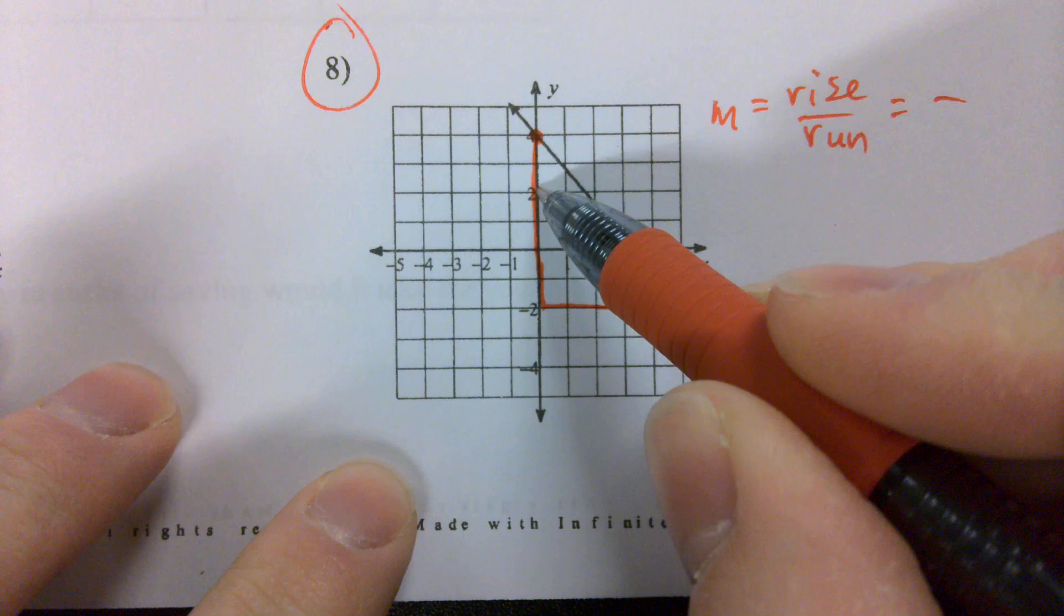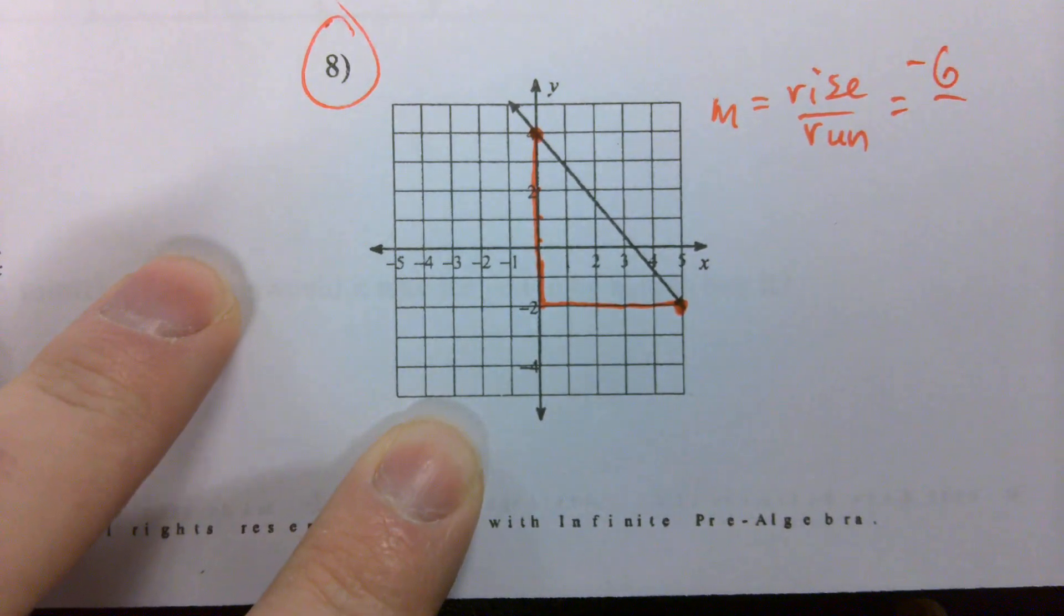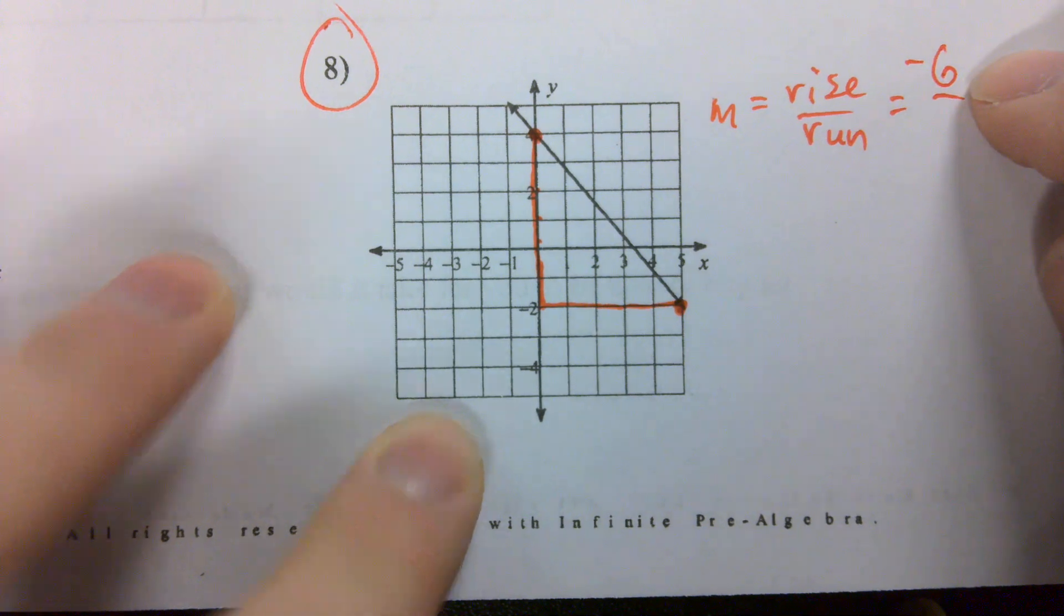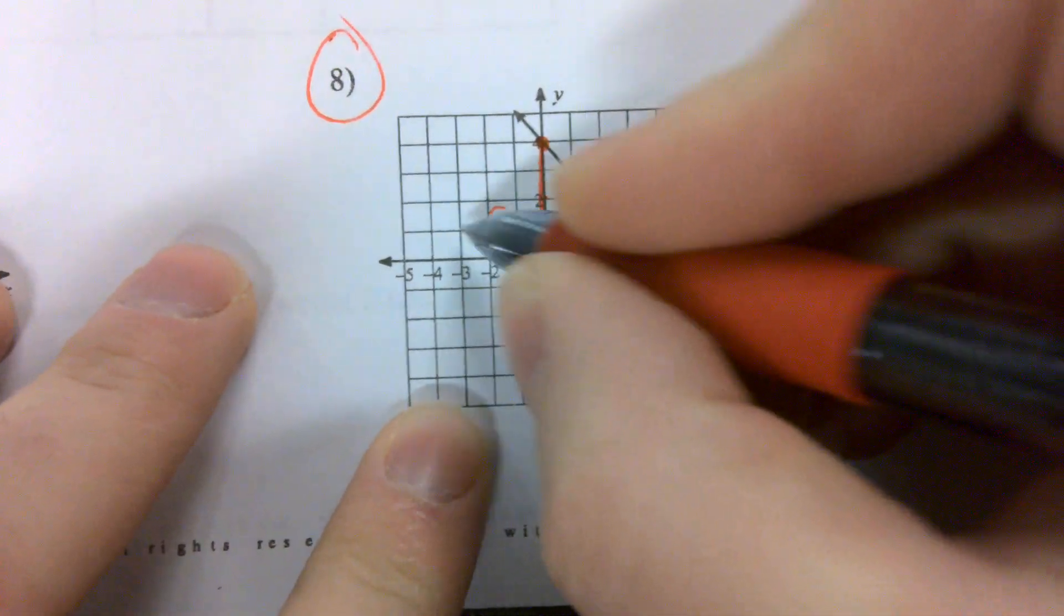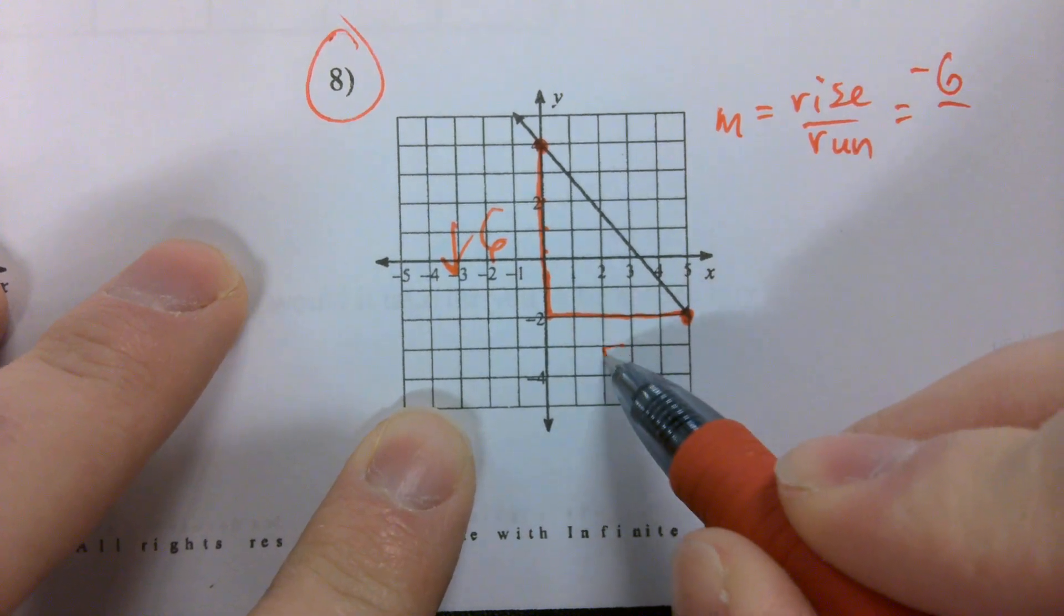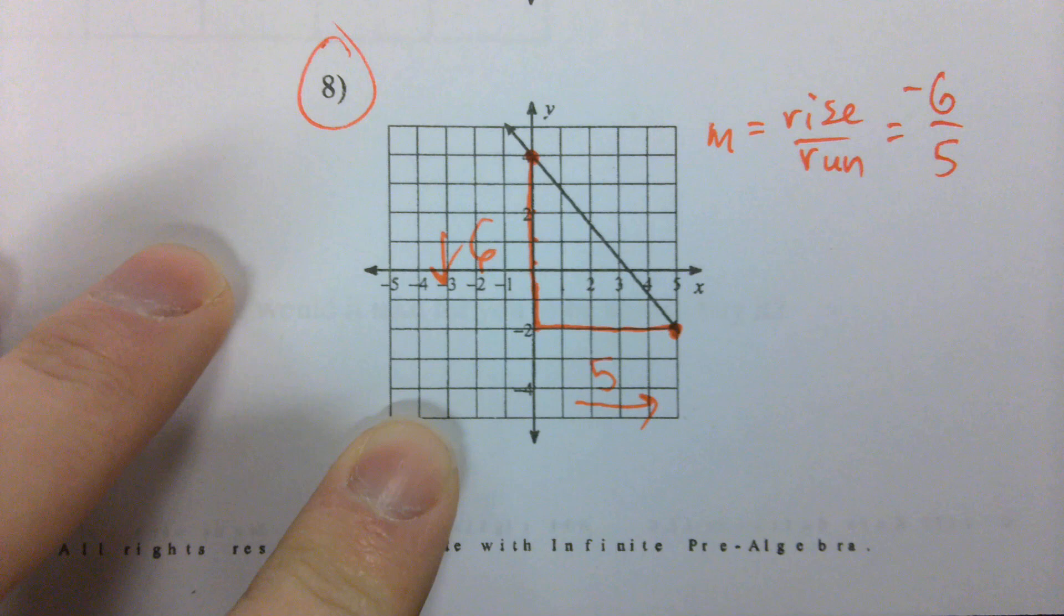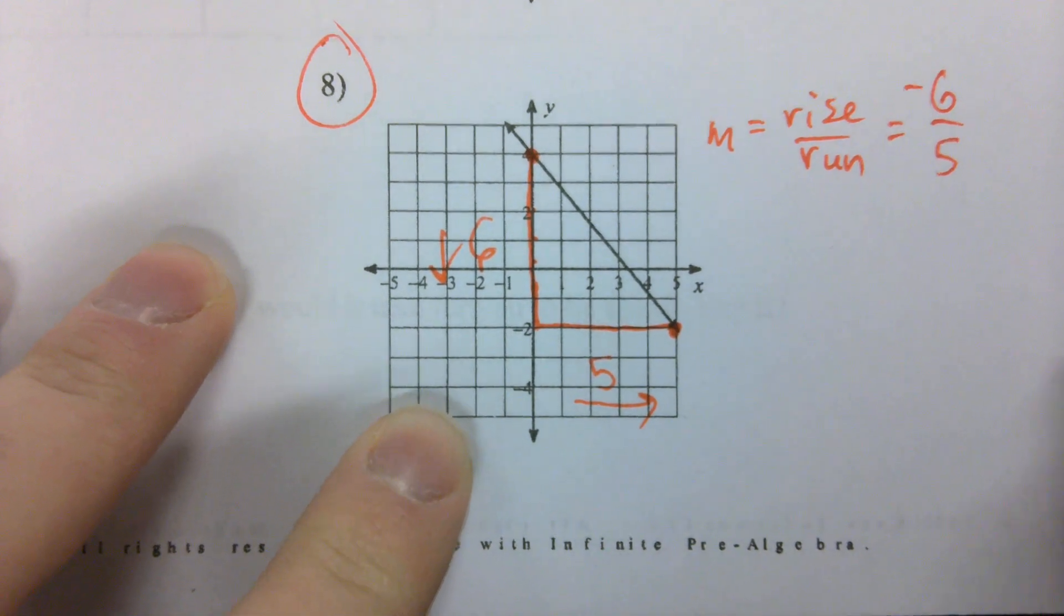We rose down one, two, three, four, five, six spaces. So my numerator is going to be negative six because we went down. How many spaces did we run over to the right? Five. There's my slope, negative six over five.